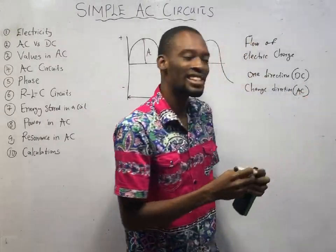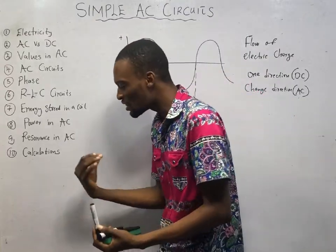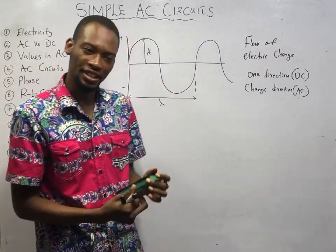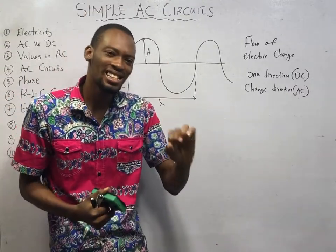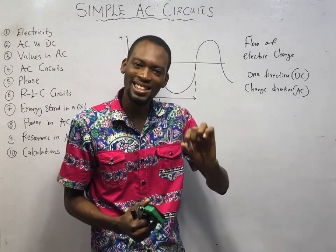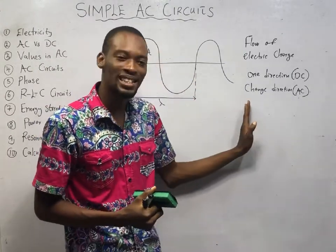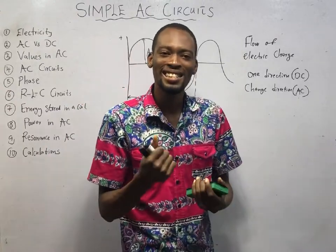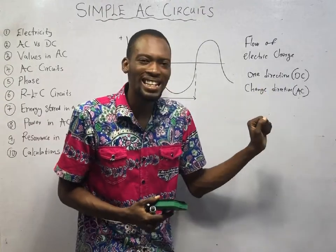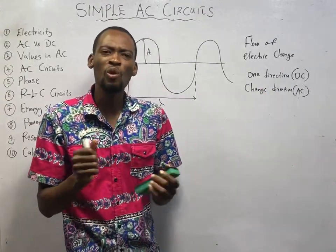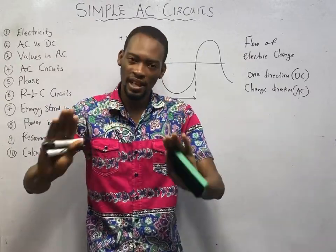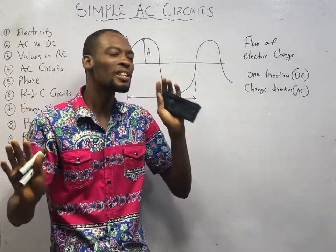This takes us to the question: what is the meaning of DC and what is the meaning of AC? DC stands for direct current. AC stands for alternating current. Direct current is a current that flows in only one direction — it can either be a positive direction or negative, and it does not change.